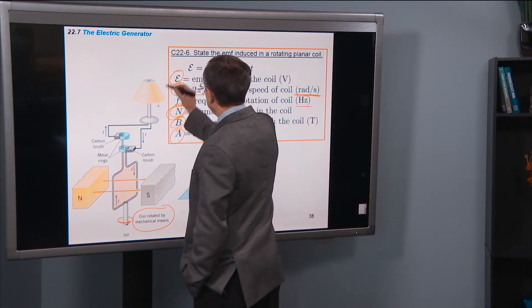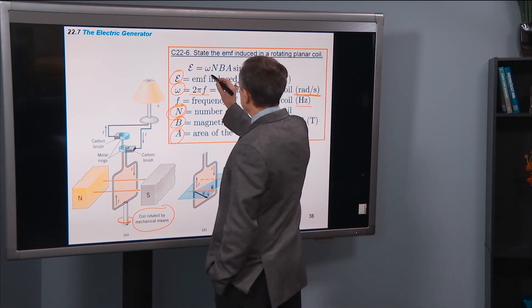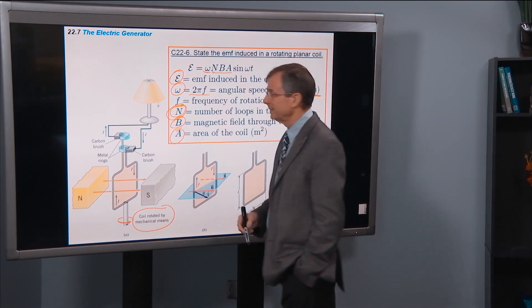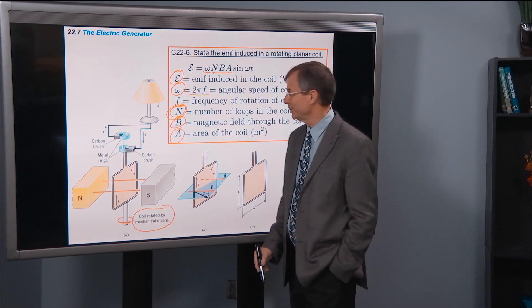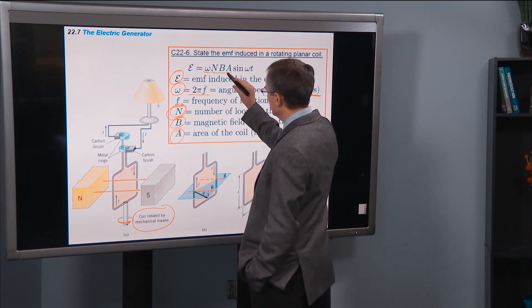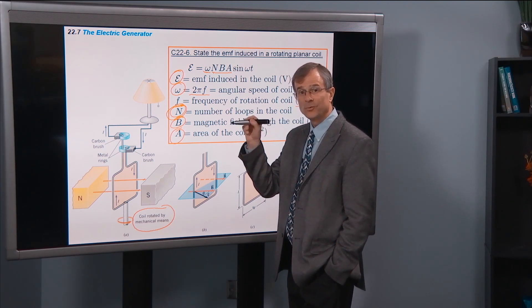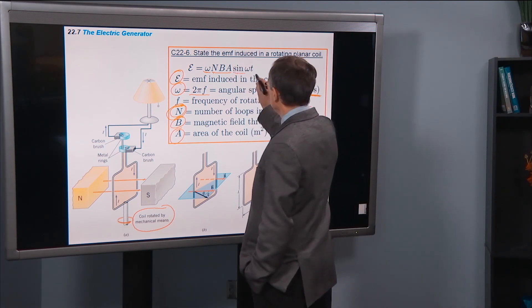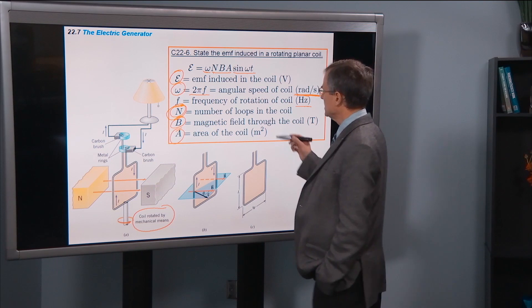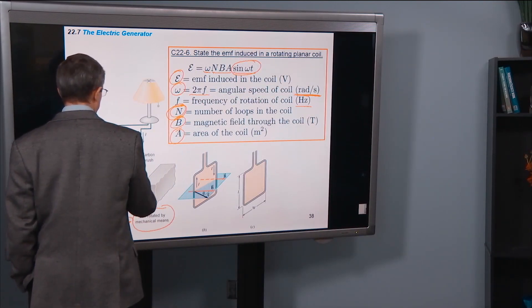So ultimately we've got an AC EMF generated in this coil. It's given by omega, the angular speed. NBA, National Basketball Association, whatever. You think about it however you want. It's the number of turns in the coil. B times A reminds you a lot of the magnetic flux. And then finally sine of omega t, which reminds you of that cosine phi. But in this case, this is a time-dependent EMF generated by this turning coil.